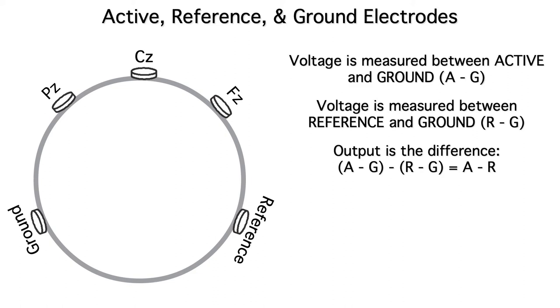If you do the algebra, you'll see that the G drops out, giving you A minus R. And A minus R is equivalent to the voltage between the active and reference electrodes. So even though we don't directly measure the active to reference voltage, that's what we end up with after our referencing procedure.